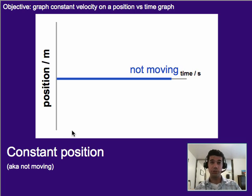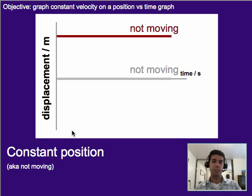Alternatively, you could be not standing at zero. You could stand at, let's say, the five meter mark. We could talk about displacement. Again, it's the same thing, the displacement from zero. You might be five meters from zero, but if you're staying there the entire time, then again, you are not moving.